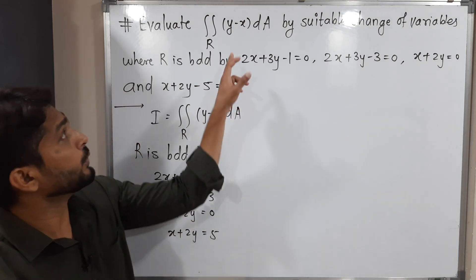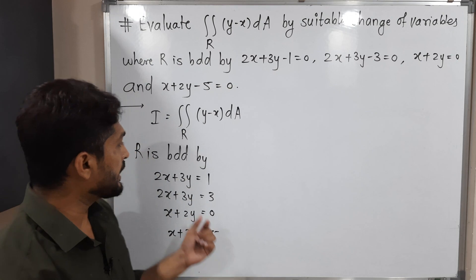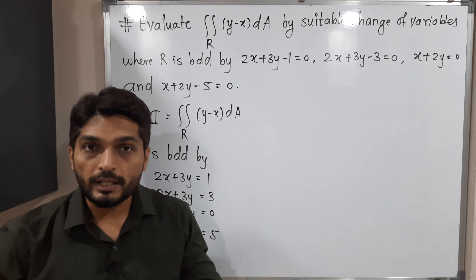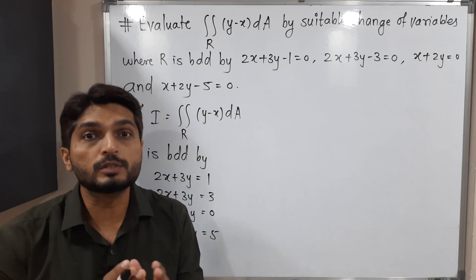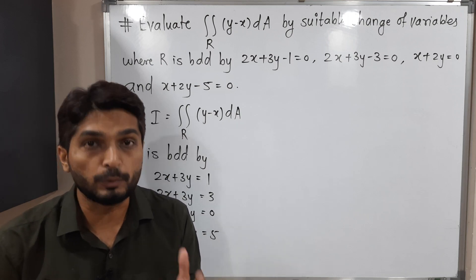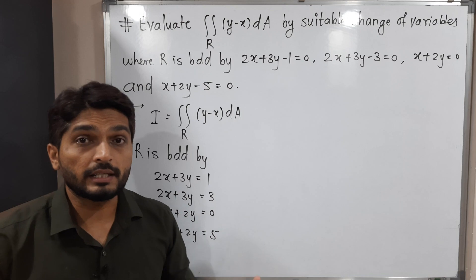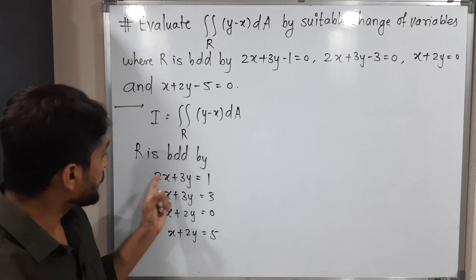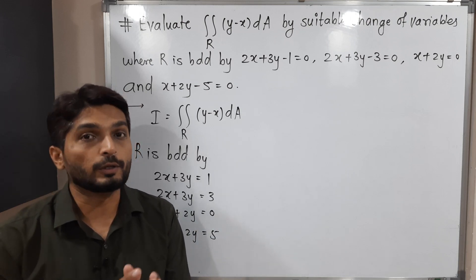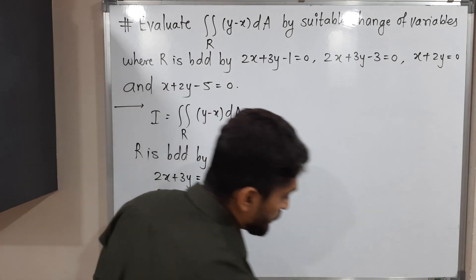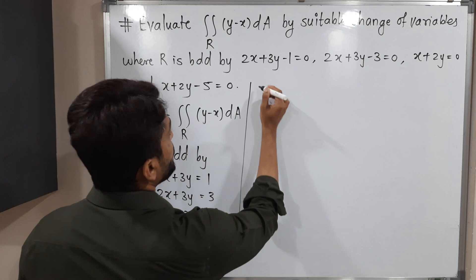As the problem specifies a suitable change of variables, we need to convert x and y into some new variables u and v. To find what to put, we look for repeating patterns. The term 2x plus 3y appears two times, so we put 2x plus 3y equal to u.